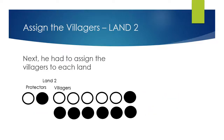Next he had to assign villagers to land 2. Again, the protectors are 0 and 1. His villagers start at binary 000001 and go all the way up to 111111.